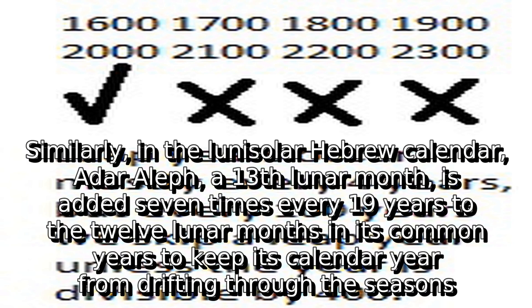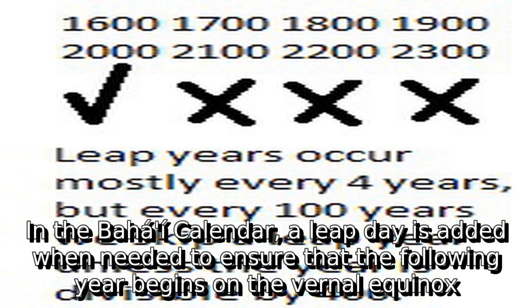Similarly, in the lunisolar Hebrew calendar, Adar Aleph, a 13th lunar month, is added 7 times every 19 years to the 12 lunar months in its common years to keep its calendar year from drifting through the seasons. In the Baha'i calendar, a leap day is added when needed to ensure that the following year begins on the vernal equinox.